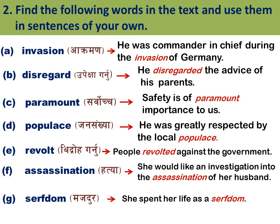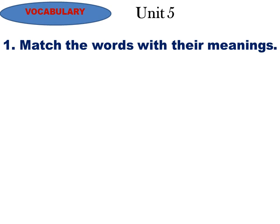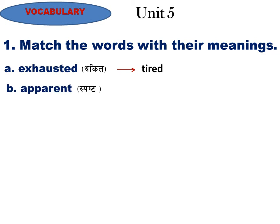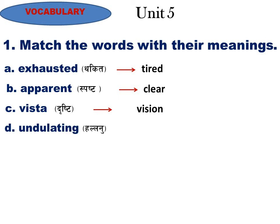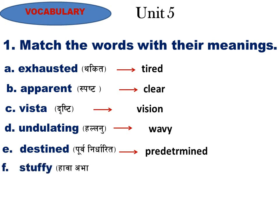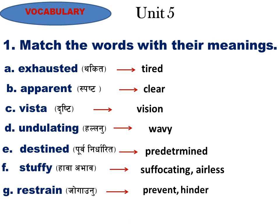Unit Five, Question One: Match the words with the meanings. A: 'Exhausted' (thakith) — tired. B: 'Apparent' — clear. C: 'Vista' (drishti) — vision. D: 'Undulating' (hallanu) — wavy. E: 'Destined' (purva nirdharit) — predetermined. F: 'Stuffy' — suffocating or airless. G: 'Restraint' (jogaunu) — prevent or hinder.